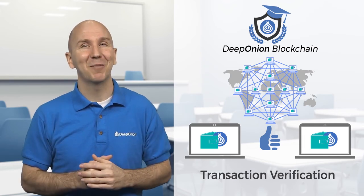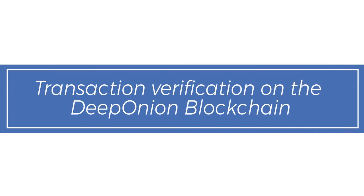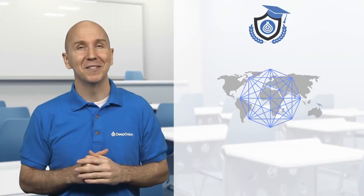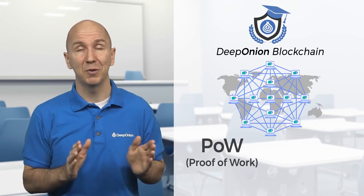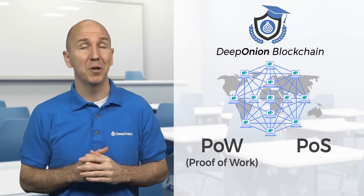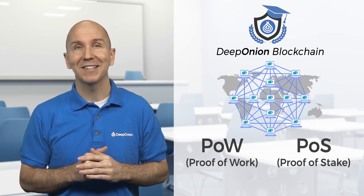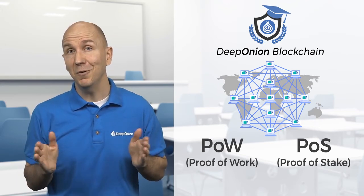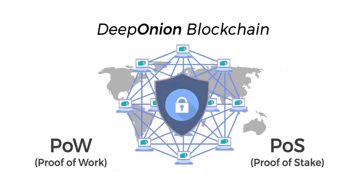As we said, the DeepOnion blockchain is really fast. DeepOnion uses two methods to verify transactions on its blockchain: POW, proof of work, and POS, proof of stake. They both perform the same task of validating transactions but accomplish the goal in different ways. This is also the reason why the DeepOnion blockchain is so secure — we use both technologies to make it happen.